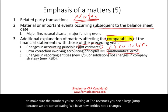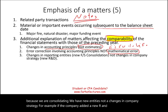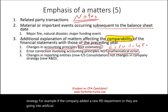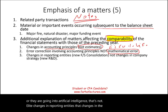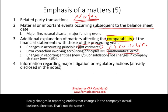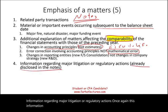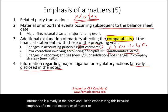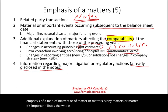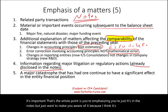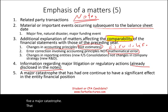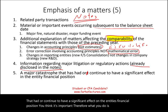Not changes in company strategy — for example, if the company added a new R&D department or is going into artificial intelligence. That's a change in the company's overall business direction, not changes in reporting entities. Fourth, information regarding major litigation or regulatory actions. Once again, this information is already in the notes — and I keep emphasizing this because that's the whole point of emphasis of other matters: it's in the notes, but we want to make you aware of it because we think it's important. Fifth, a major catastrophe that had or continues to have a significant effect on the entity's financial position — you think it's important, so you emphasize this point in the audit report.